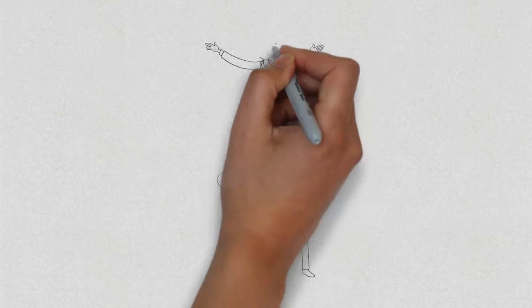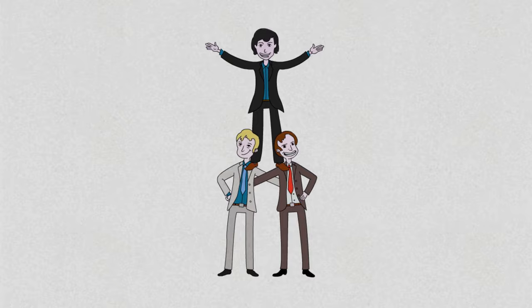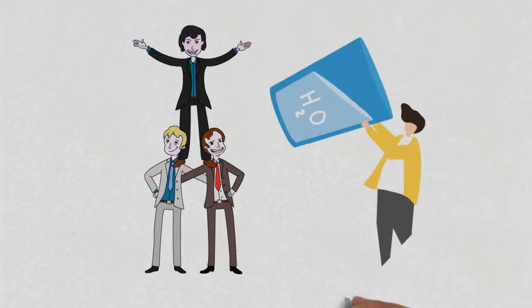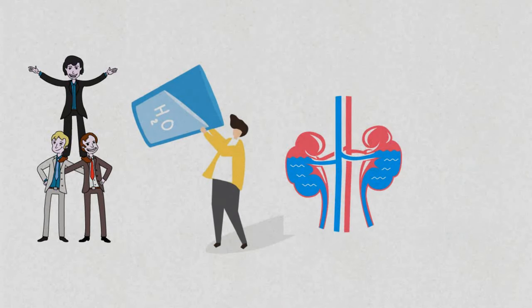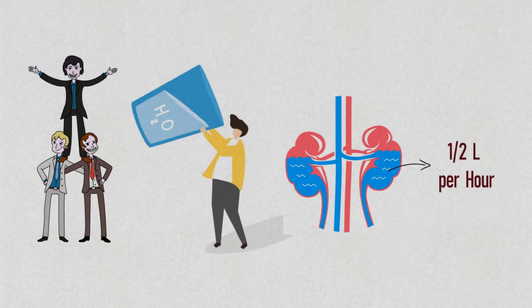Young, healthy people do not normally get hyponatremia unless they drink liters and liters of water at once, because your kidney can only expel about half a liter at most an hour.